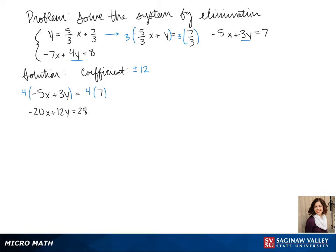For our second equation, negative 7x plus 4y equals 8, we're going to multiply it by negative 3. This gives us 21x minus 12y equals negative 24.